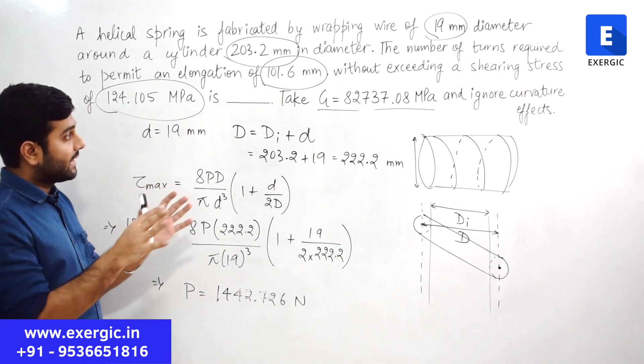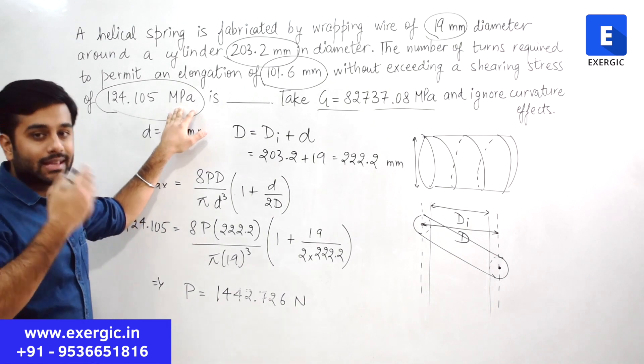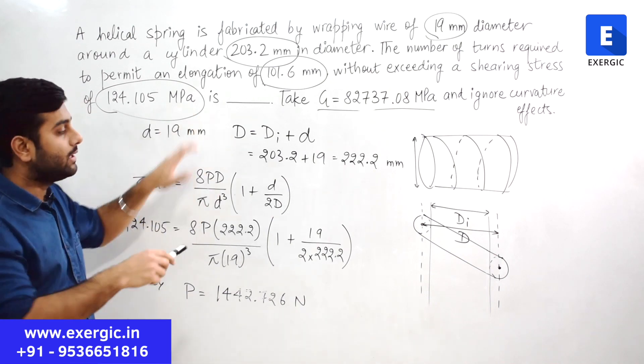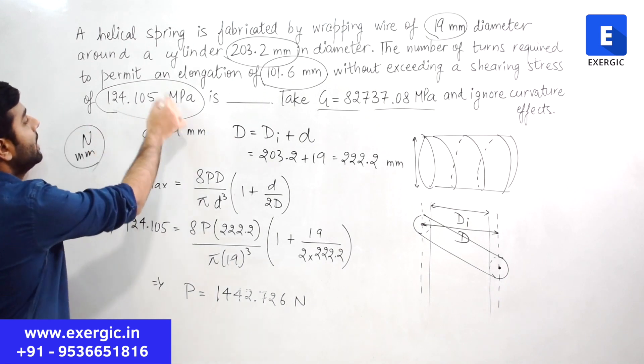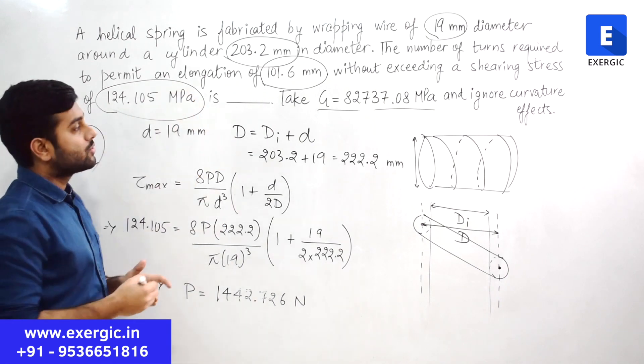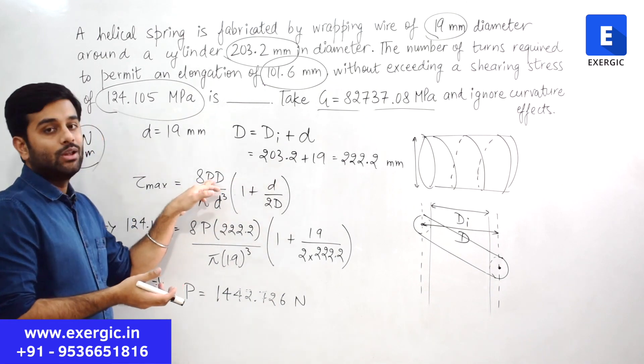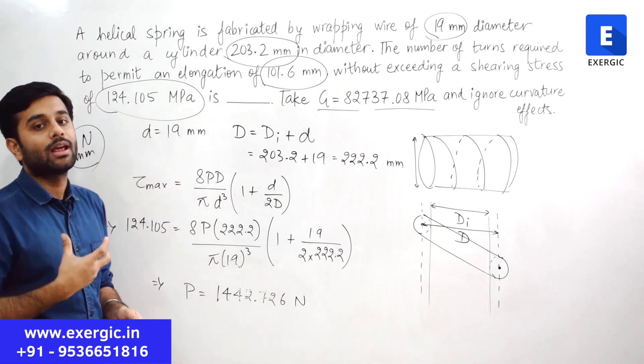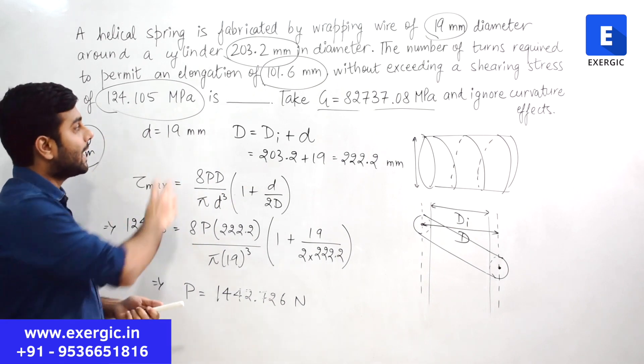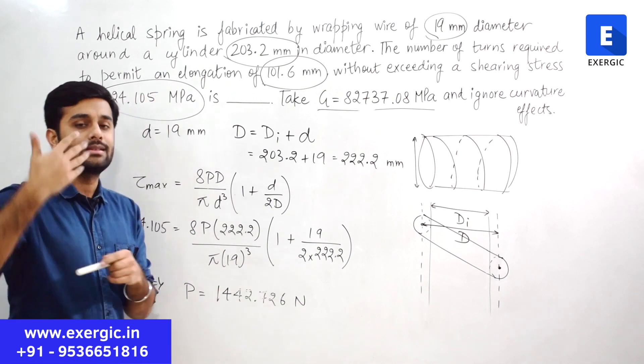Also, one more small thing here that since this unit is in mega Pascal, I can make the units coherent by keeping them in Newton or mm since this is Newton per mm square. So if I keep all the length dimensions in mm, I will automatically get the value of P in Newton because this tau max is in Newton per mm square or mega Pascal. So directly I am putting this value here. Some of you will start converting it unnecessarily.